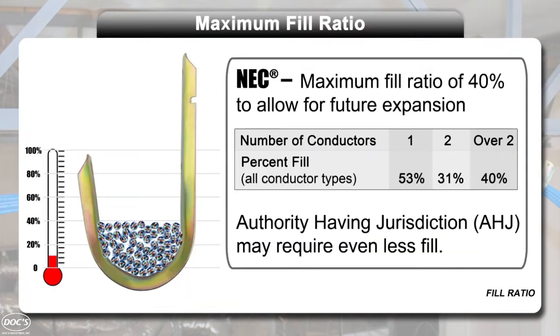NEC recommends a maximum fill ratio of 40% of the total capacity of the hook. This allows for future modifications and expansion.